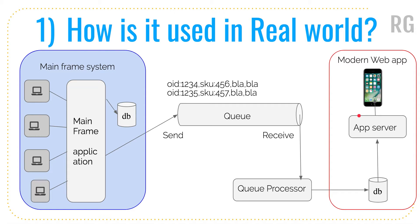Now if a new requirement comes in after a few years — say, you need to generate another report — you don't need to go back to the mainframe system. You already have all the information in the messages. You can use those messages to build a different queue, send them to a different queue processor, and create a different report. That is one real-world use case I have seen in the past.